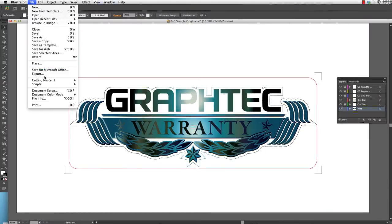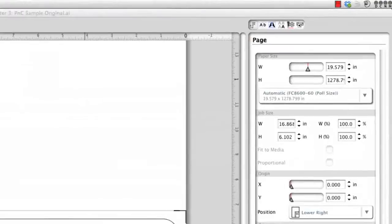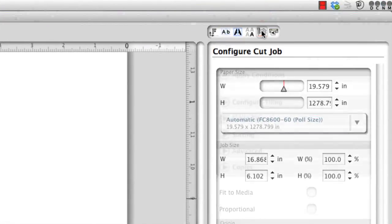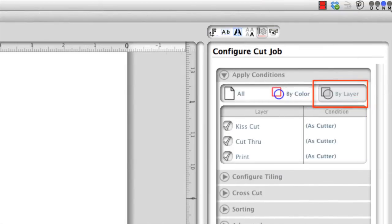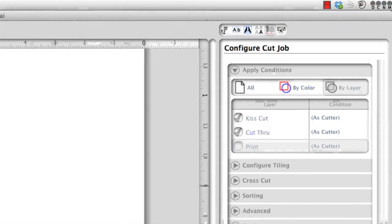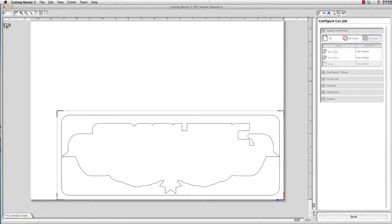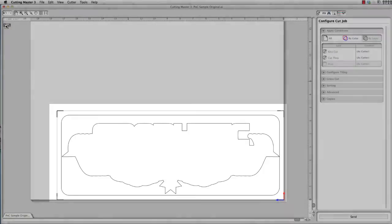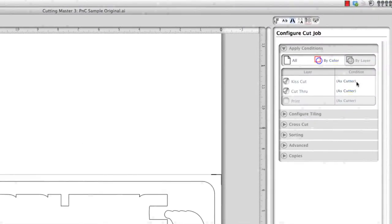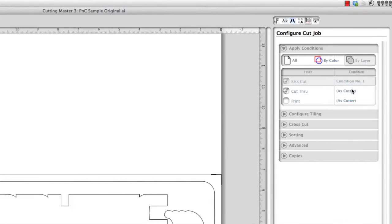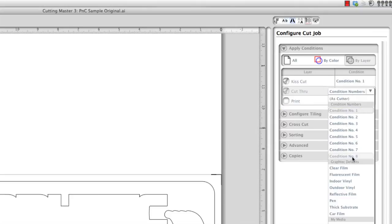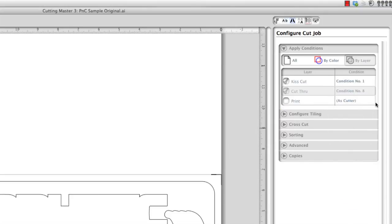We can now send the job to Cutting Master 3. We'll click on configure cut job. Under apply conditions we'll click on the by layer option since for this job we have separated the items by layers. Click on the check mark next to the print layer since we won't be printing. This will remove everything except the two cut lines. We'll first click on the condition setting for the kiss cut layer and select condition 1, then set the condition for the cut through layer to condition 8.